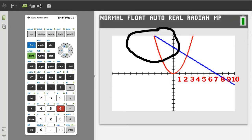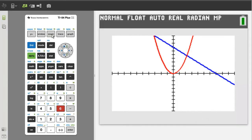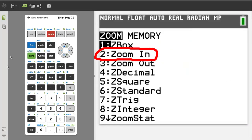But I want to see more in this area, so press the zoom button. Now let's use zoom in. Zoom in is number 2, so press the 2 button.